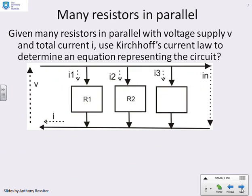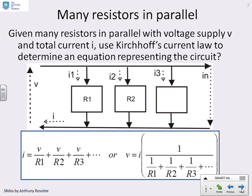What happens then if I have lots of resistors in parallel? With the same voltage supply, V, and a total current, I. Now, again I can use Kirchhoff's current law to determine an equation representing the circuit. So here it is. You can see I've got V over R1, which is I1. V over R2, which is I2. V over R3, which is I3. And so on, all the way up to IN. So I can just add all the currents to all these parallel loops. And that gives me the total current I.